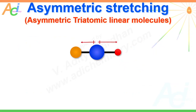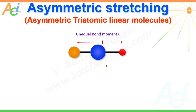Here is a special case of asymmetric stretching in asymmetric triatomic linear molecules. In this case, the stretching is asymmetric since the atoms connected to the central atom are different. Look at this hypothetical molecule — the bond moments are unequal, hence there is an initial net dipole moment. The dipole moment is changed during the stretching vibrations, hence it is IR active. Note that even if both bonds are vibrating at the same time, the magnitude is not the same: the bond associated with the smaller atom is subjected to more stretch than the bond with the larger atom, hence this stretching mode is asymmetric.